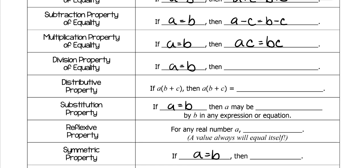And then division. So again, if you have something like this and you have to divide by two on both sides, or divide by any number, that is using the division property of equality.